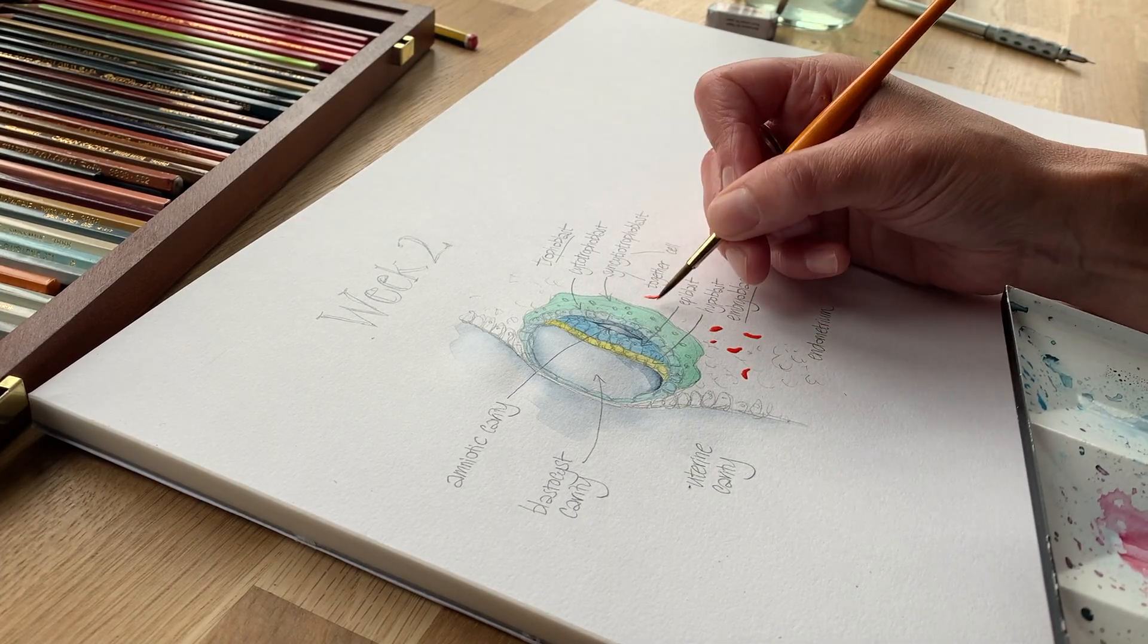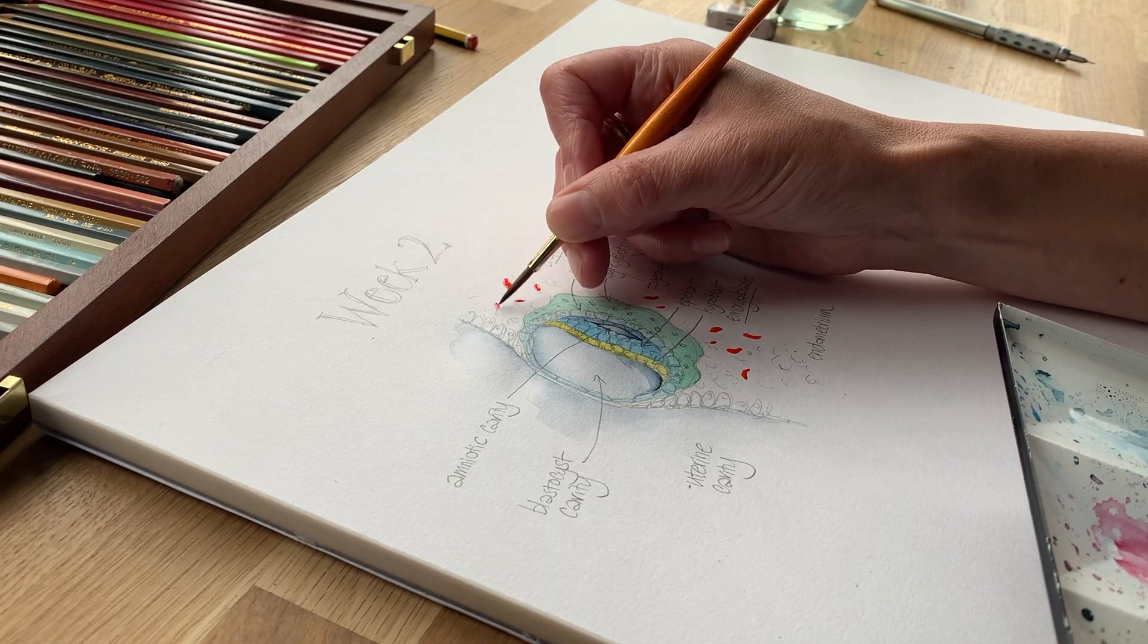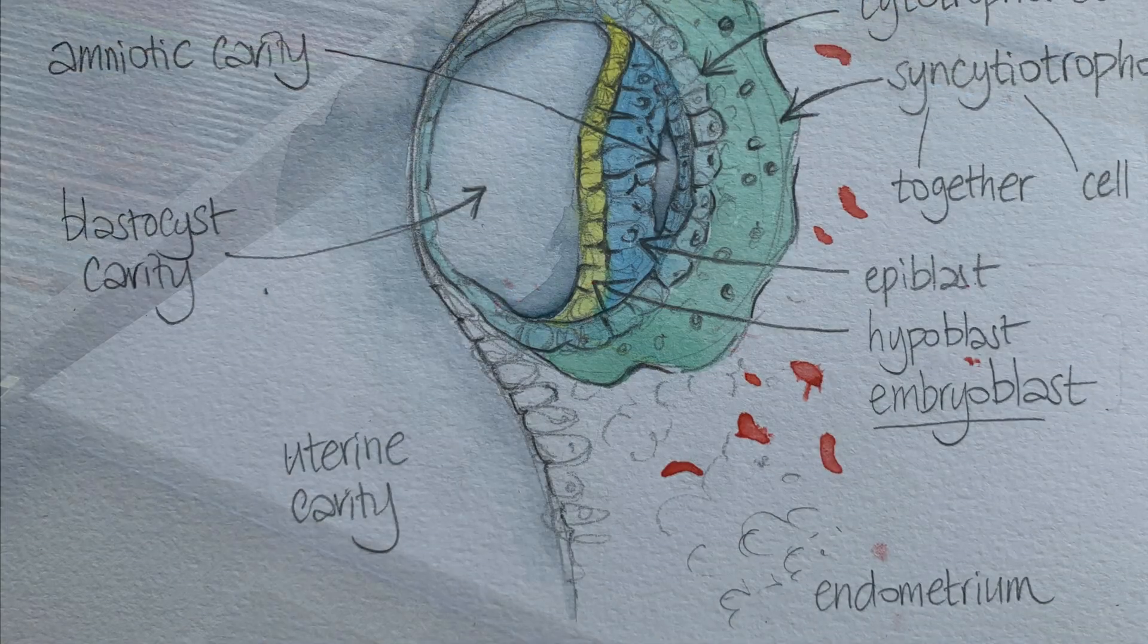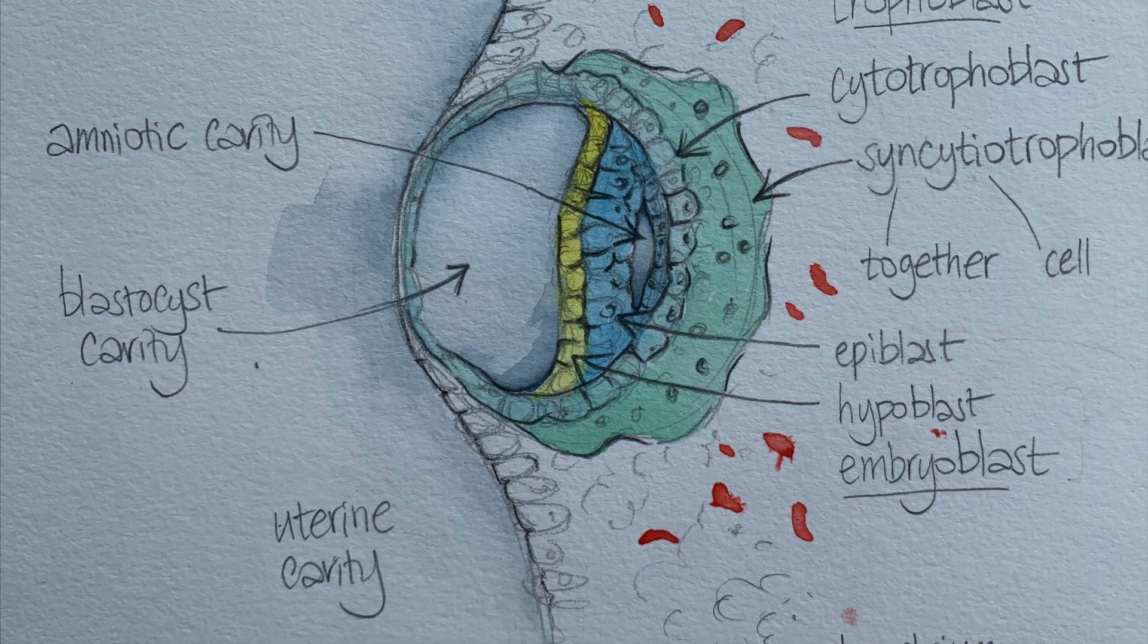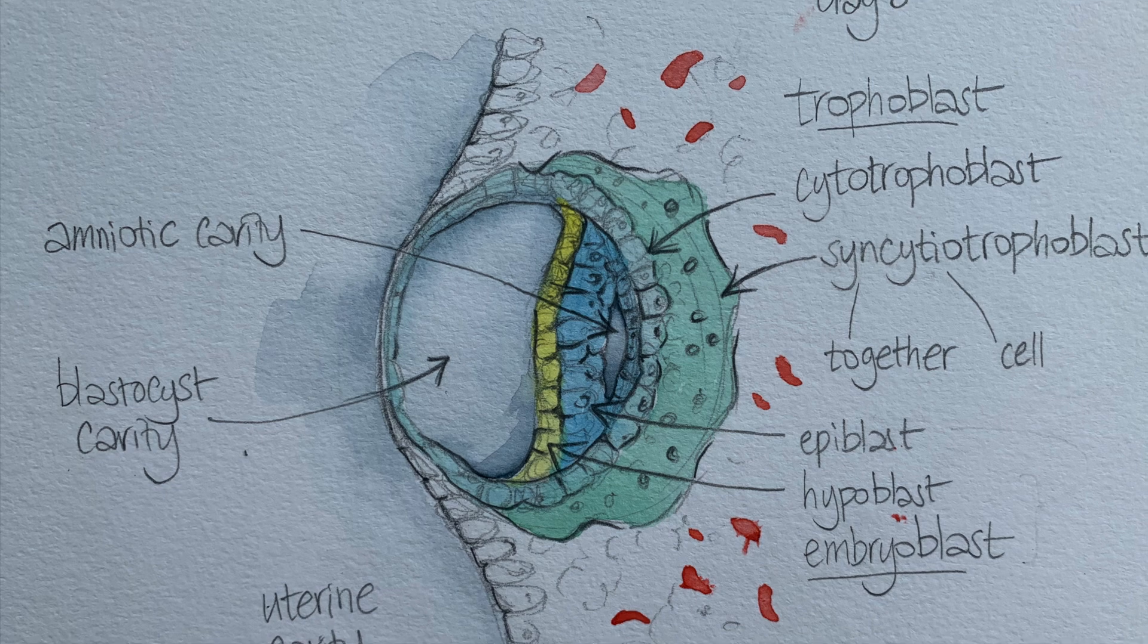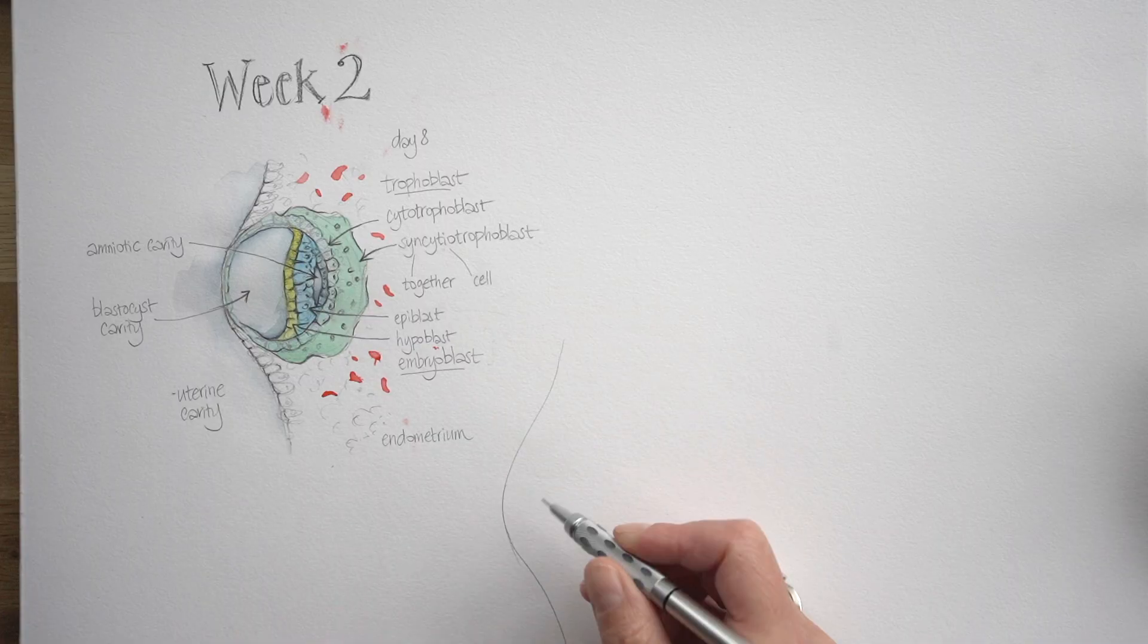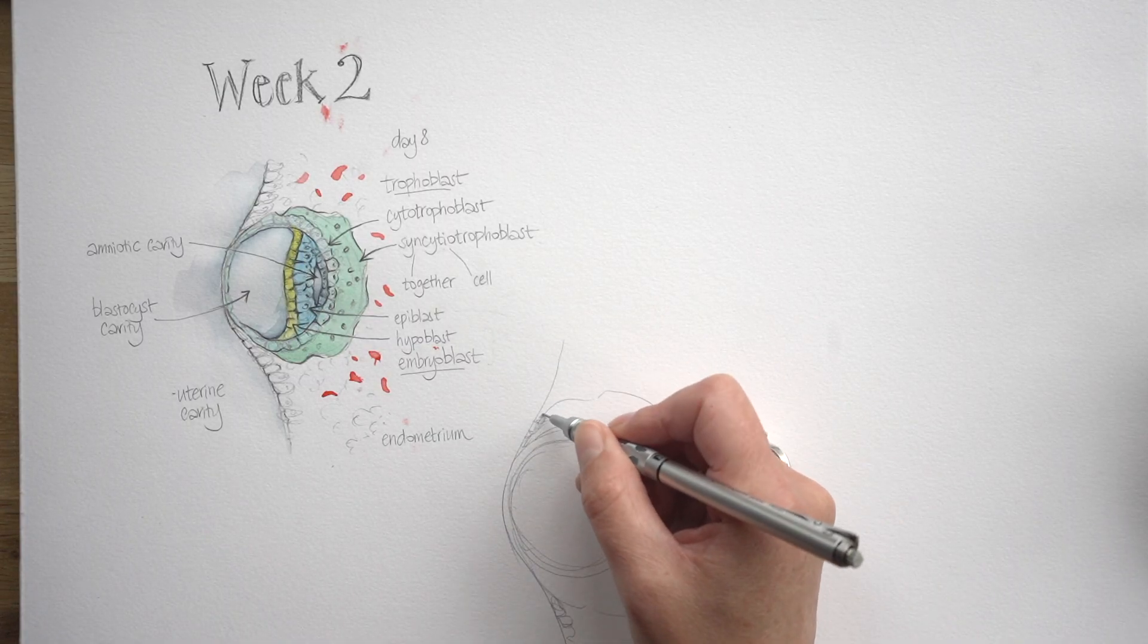Now, here are some blood vessels in the endometrium, in the lining of the womb. And those are growing larger in response to this implanted embryo. So there we go, that's what this embryo looks like at the end of day eight after fertilisation. The trophoblast is split into two layers, and the embryoblast is split into two layers as well. Let's move on to the next day of development.